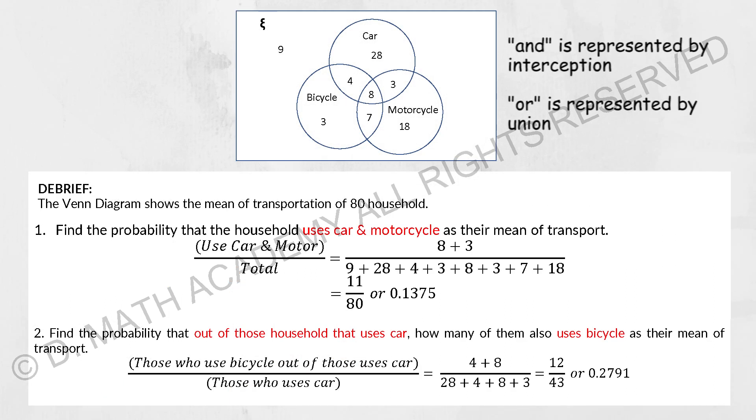So for the next one we have a Venn diagram. Find the probability that household uses car and motorcycle as their means of transport. So car and motorcycle, it will be 8 plus 3 divided by the total, which is 80 households. You will get 11 over 80 or 0.1375. For the next one, find the probability that out of this household that uses car, they also use bicycle as their means of transport. So those who use car, the total will actually be 43, and those who use bicycle as well will be 4 plus 8. So you get 12 over 43 or 0.279.